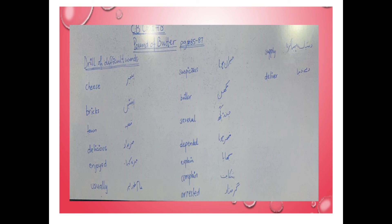We are going to make sentences from these words: cheese, bricks, town, delicious, enjoyed, usually, suspicious, butter, several, dependent, explain, complain, arrested, supply, and deliver. Cheese — I love cheese. Bricks — I can see red bricks over there, they are looking very beautiful. Town — this is a very famous town. Delicious — the cake is very delicious. Enjoyed — I enjoyed the cake. Usually — we usually get late from school. Suspicious — you are looking suspicious. Butter — I love to eat butter at breakfast. Several — several people are absent from school.